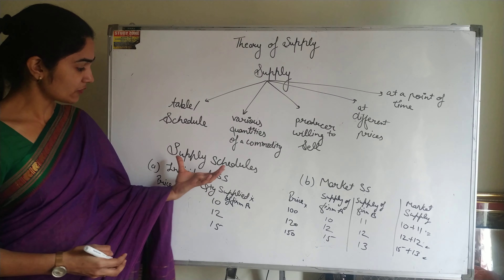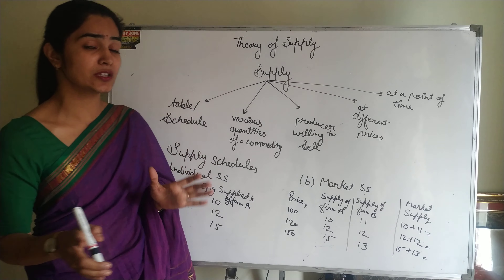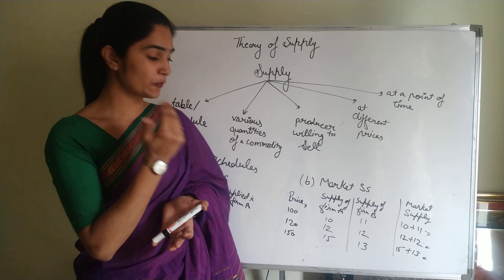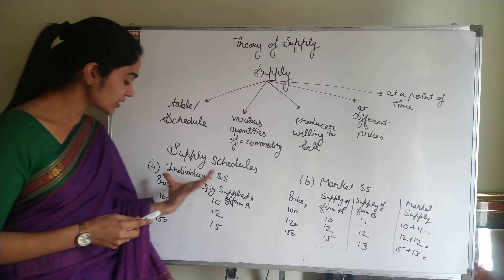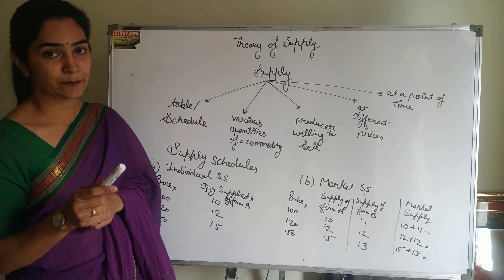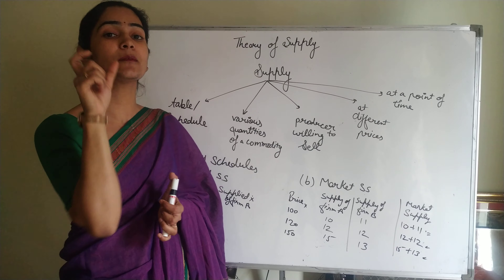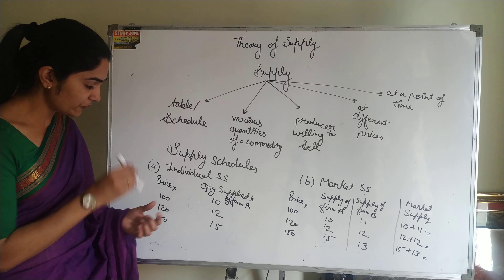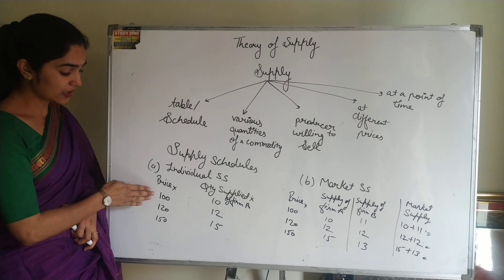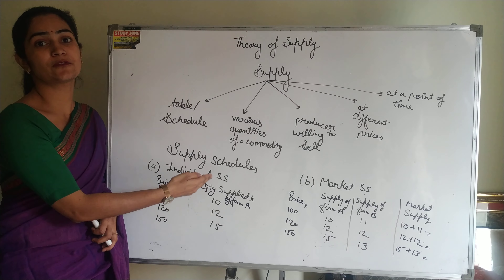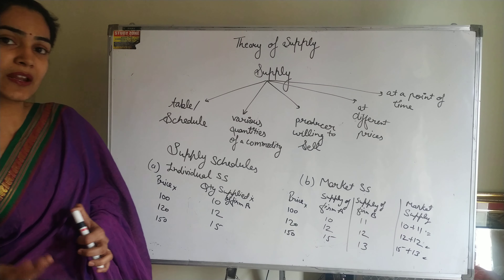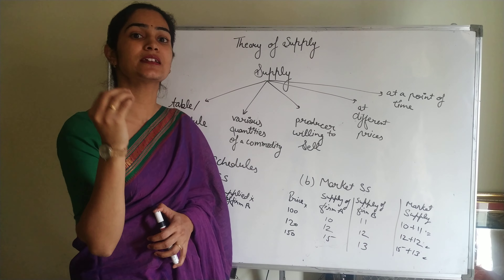While discussing this, we have used two terms: quantity supplied and supply. What is the difference? Supply is a schedule showing all various possible combinations of price and quantity — a whole schedule with different quantities supplied at different prices. But when we talk about quantity supplied, we are talking about a particular price: at this price, how much quantity is supplied? For example, if the price is 100 rupees, firm A sells 10 units — that is the quantity supplied. Supply refers to the whole schedule; quantity supplied refers to a specific price point.